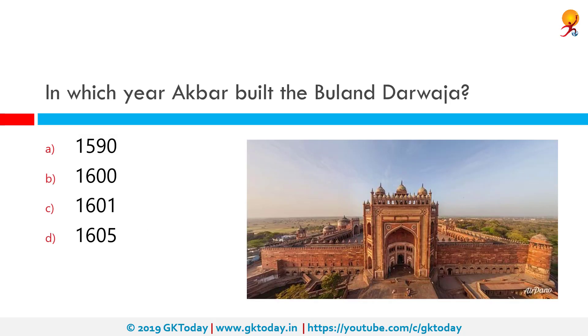In which year did Akbar build the Buland Darwaza? The correct answer is 1601. Buland Darwaza is located in Fatehpur Sikri and was built by Akbar in 1601 AD to commemorate his conquest of Gujarat.